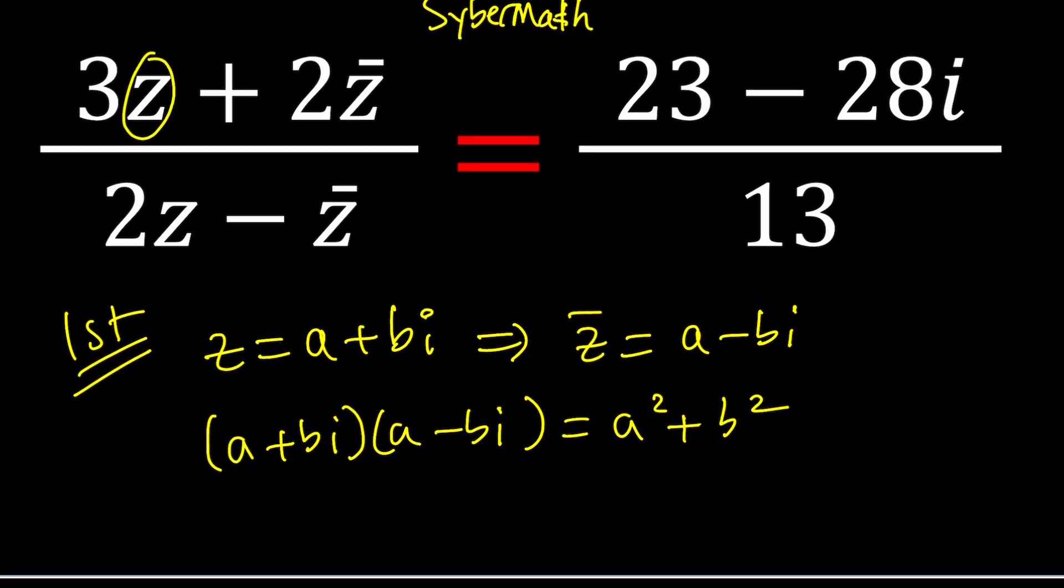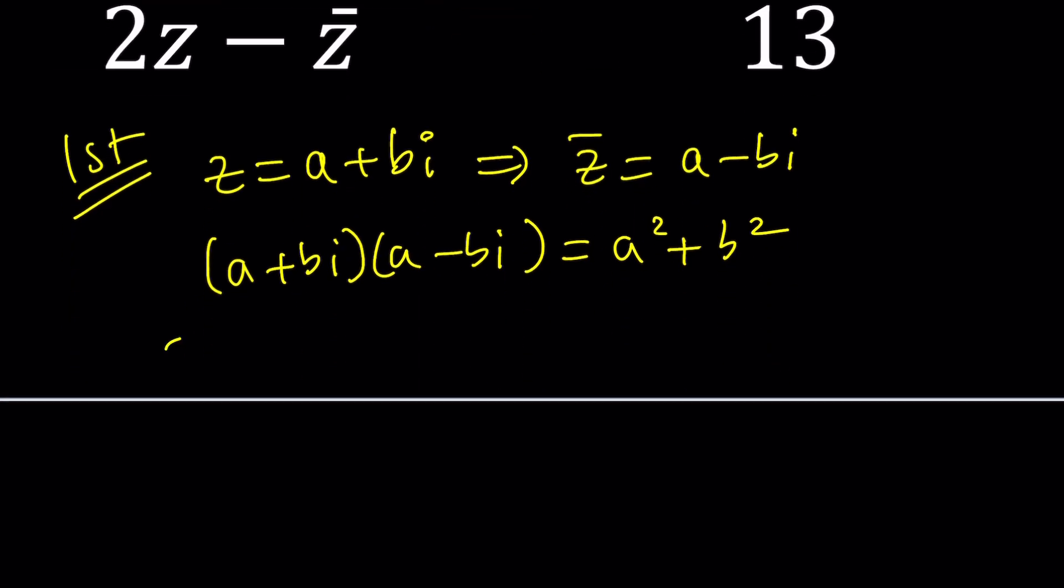So let's go and make the replacements. Three times z which is a plus bi plus two times a minus bi